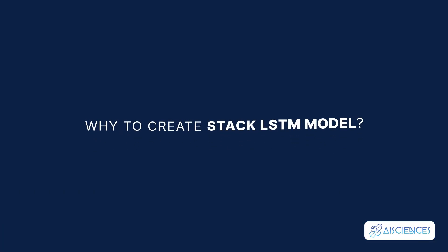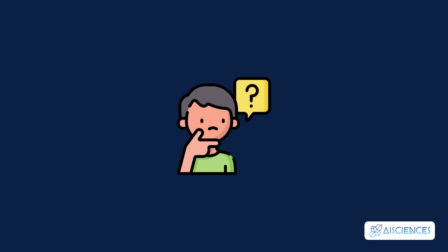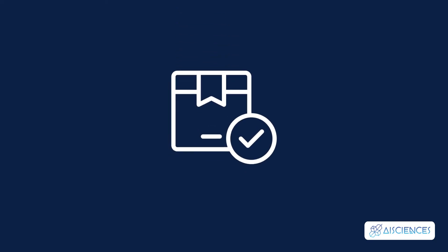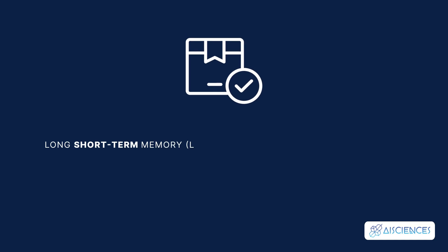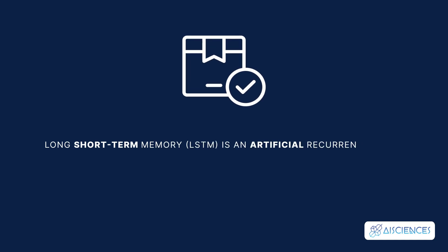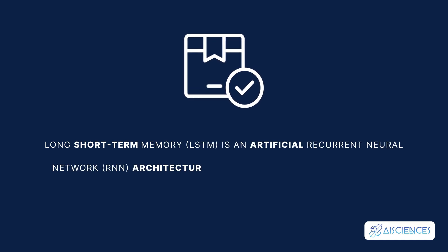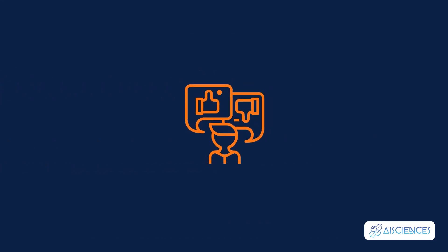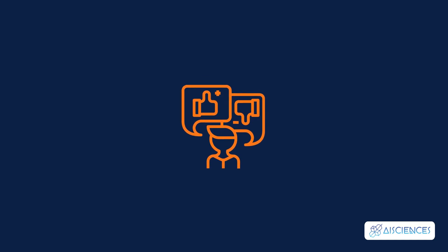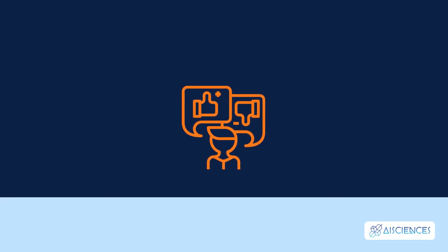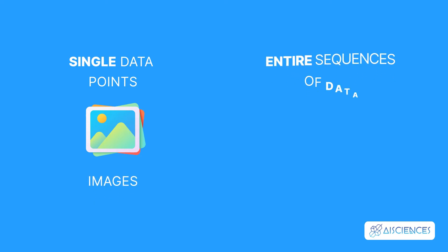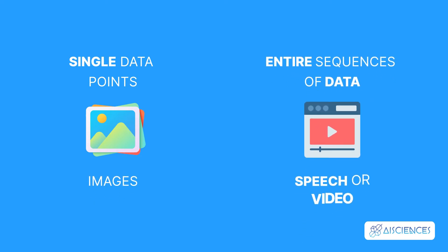Why create a Stack LSTM model? We know that a human brain does not always start thinking from scratch. A similar technology is now available as LSTM. Long Short-Term Memory, LSTM, is an artificial recurrent neural network, RNN, architecture used in the field of deep learning. Unlike standard feedforward neural networks, LSTM has feedback connections. It can process not only single data points, such as images, but also entire sequences of data, such as speech or video.